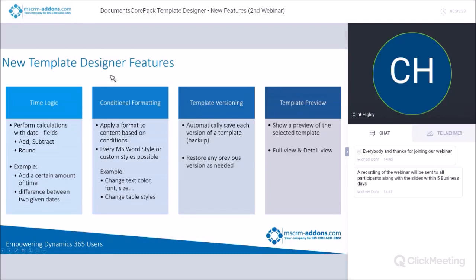What we're here for today is the new template designer features. The first one is time logic, which has been really requested by a lot of people. Basically it allows you to perform calculations with date fields — you can add or subtract, round up to the next seven days or similar intervals. Some examples are adding a certain amount of time to a date such as today's date plus 30 days or plus 90 days, and you can also calculate the difference between two given dates.